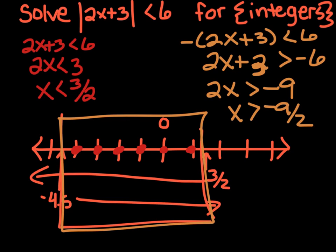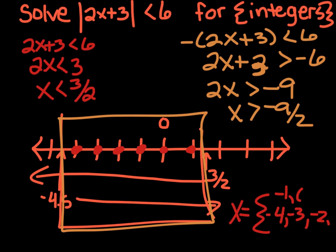So when we write our answer, remember it's specific values — we put it in the fancy brackets and write it out. In this case it'll be negative 4, negative 3, negative 2, negative 1, 0, and 1, all in the fancy brackets. And that's how you do that.